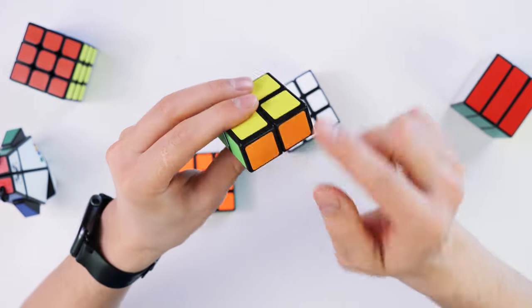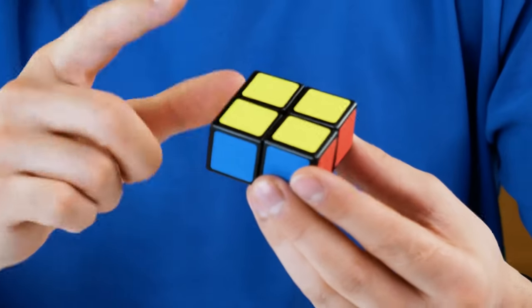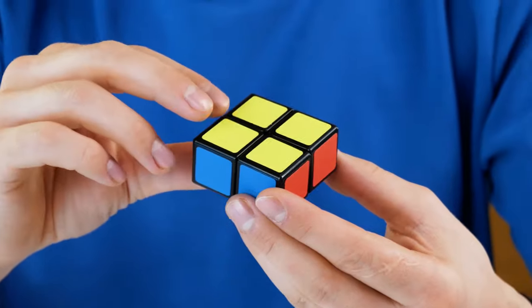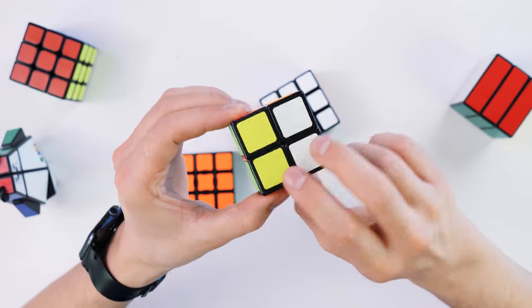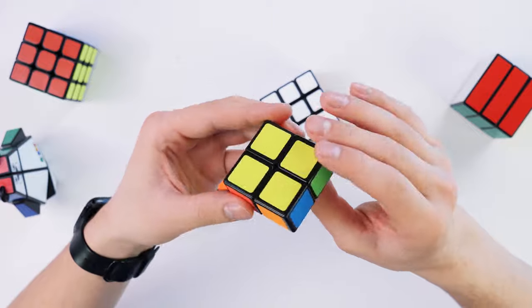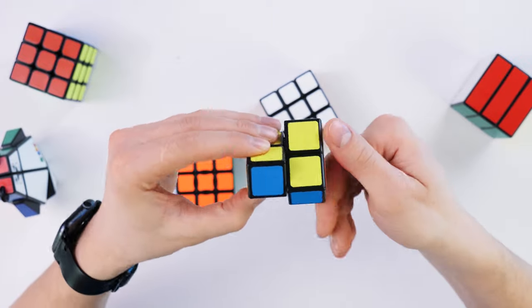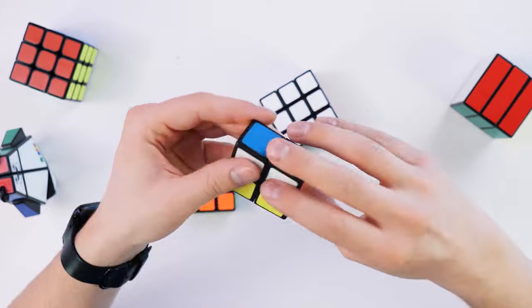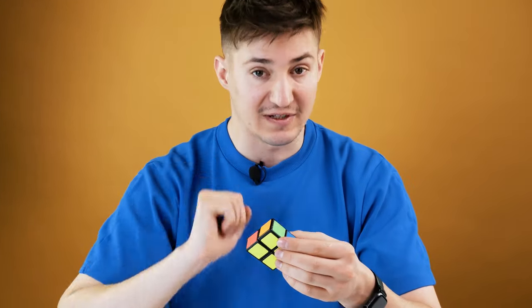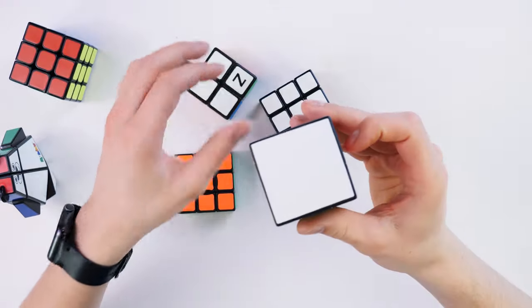There is also such a flat Rubik's cube. This cube was already in one of my videos about simplest Rubik's cubes. It is really the simplest because it can be solved in scrambling. And that is what just happened.